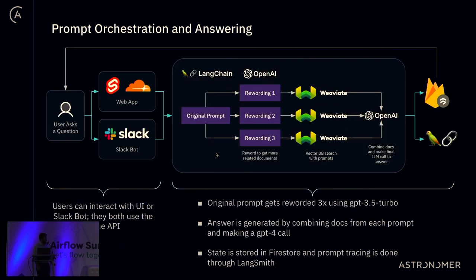Once Weaviate is set up, we use that data to answer users' questions. Users can ask via the web app or the Slack app — both served by the same API, giving the same answer and sources. We take the original prompt and use GPT-3.5 to reword it a couple of times, because there may be other relevant documents based on variations of the prompt. This rewording with GPT-3.5 Turbo takes less than two seconds and means we get more accurate, more relevant, and more sources.